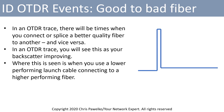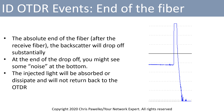In an OTDR trace, there will be times when you connect or splice a better quality fiber to another and vice versa. In an OTDR trace, you will see this as your backscatter improving — where this is seen is when you use a lower performing launch cable connecting to a higher performing fiber. The absolute end of the fiber, for example after the receive fiber, the backscatter will drop off substantially. At the end of the drop off, you might see some noise at the bottom. The injected light from the OTDR will be absorbed or dissipate and will not return back to the OTDR — so this is what the trace would look like at the end of the fiber.